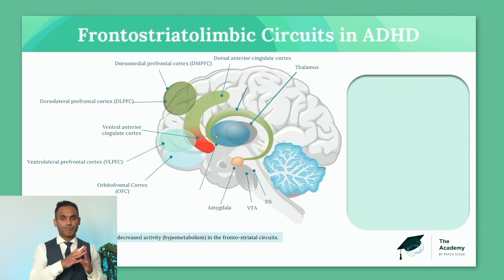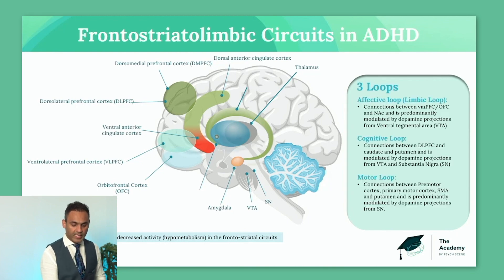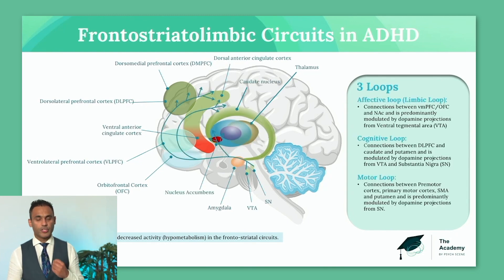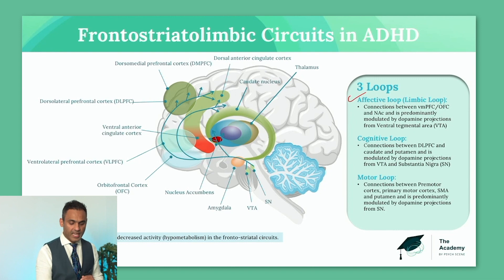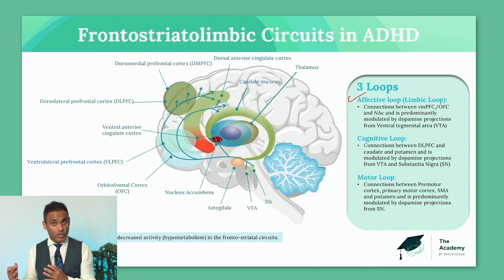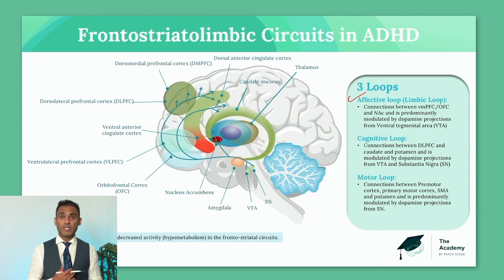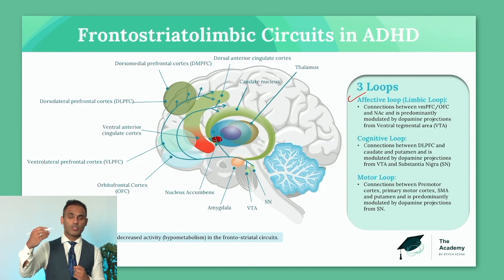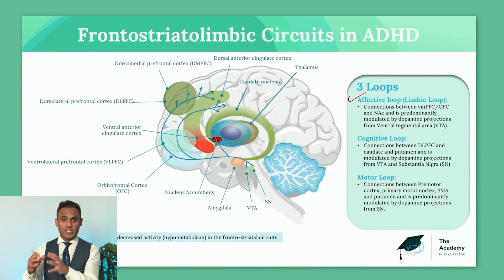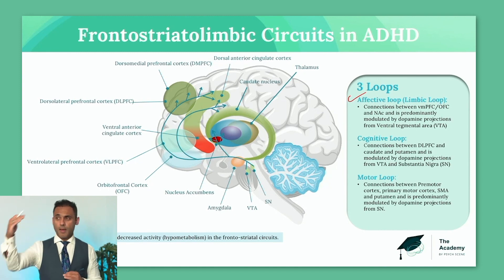There are three key loops for you to consider broadly whenever you're looking at any psychiatric patient. You can broadly divide it into the affective loop — this is of course the tripartite network. The affective loop is the limbic loop, and the key message here is always examine for symptoms of hyperarousal and activation. The limbic loop, the mesolimbic system — the extreme end is psychosis, hypomania, mania.